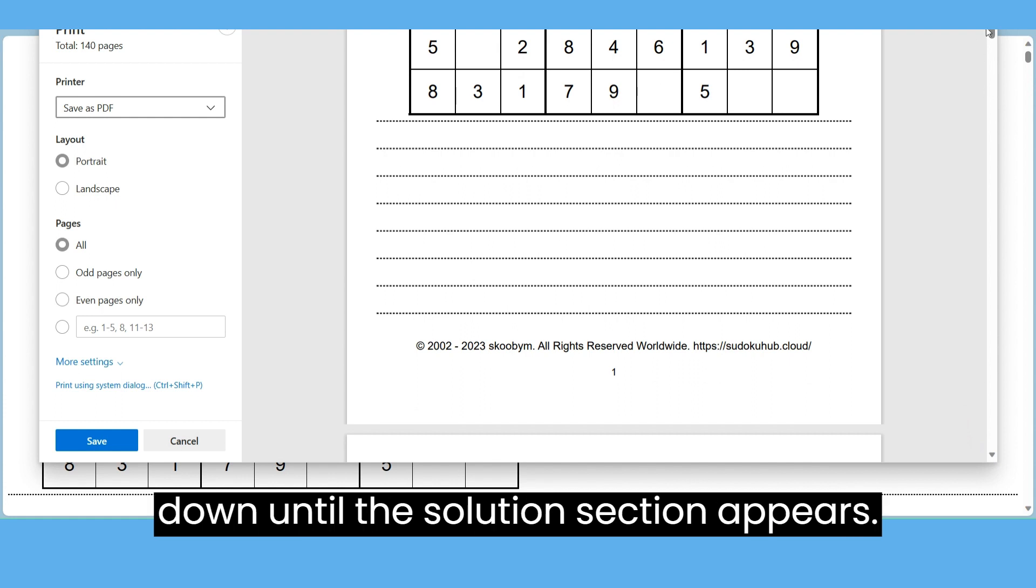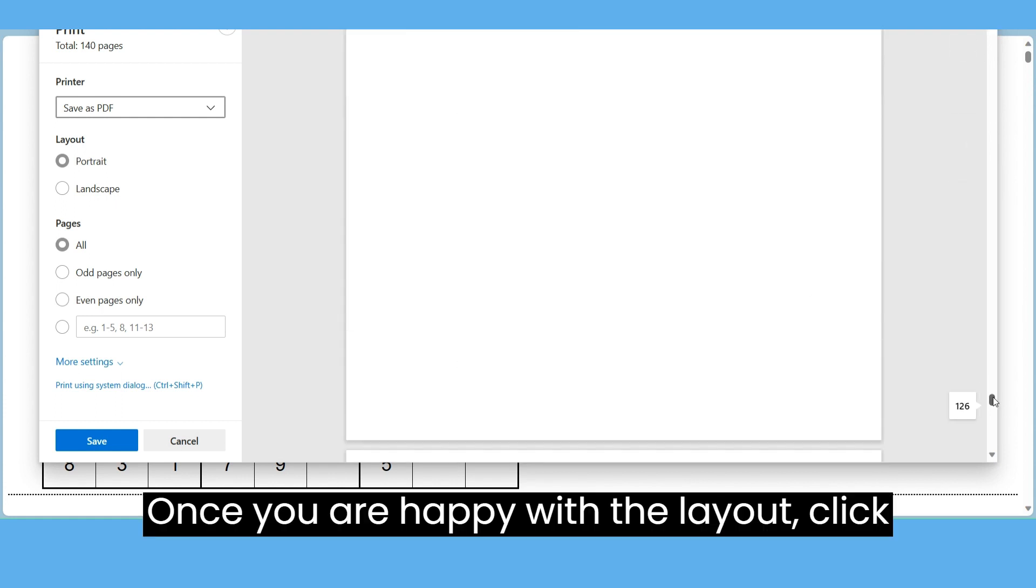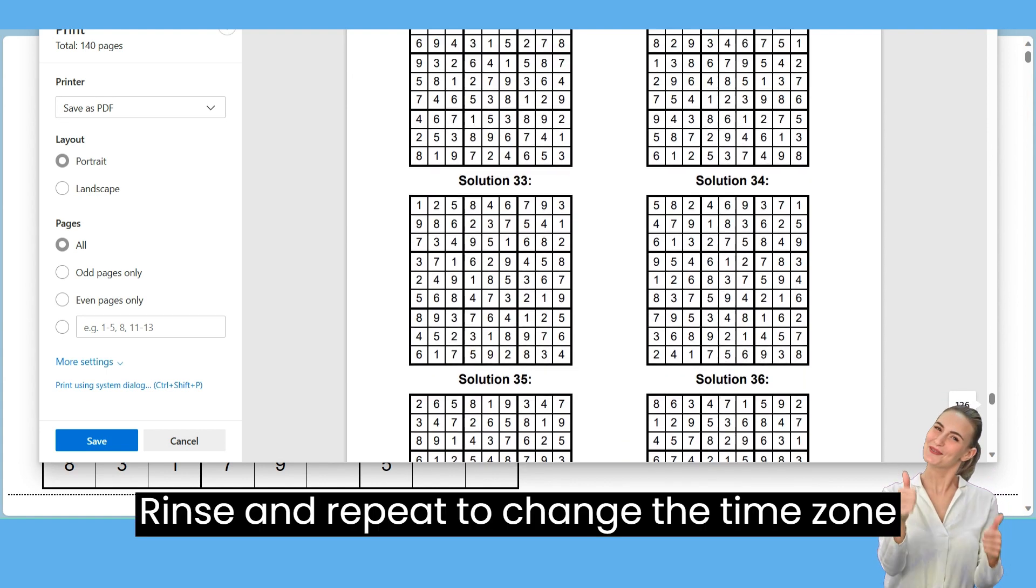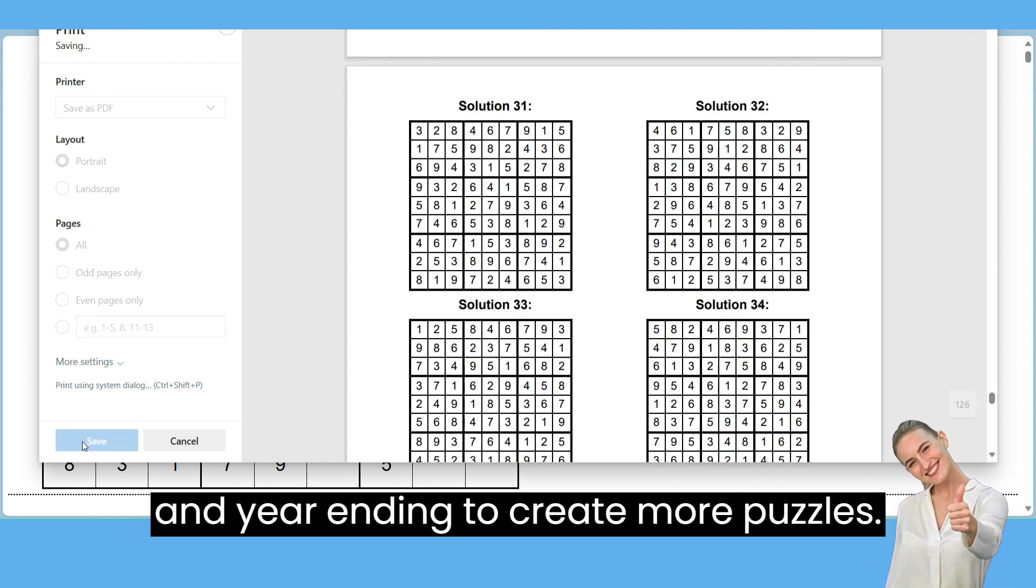Once you are happy with the layout, click the blue Save button to create the PDF. Rinse and repeat to change the time zone and year page number ending to create more puzzles.